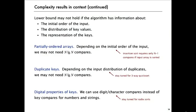And later on, we'll look at digital properties of keys where we can use digit or character compares instead of whole key compares and get a faster sort for certain practical applications. Computational complexity is a very useful way to help us understand properties of algorithms and help guide our design decisions.